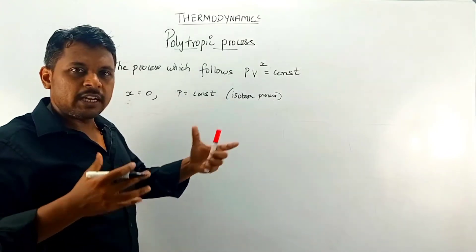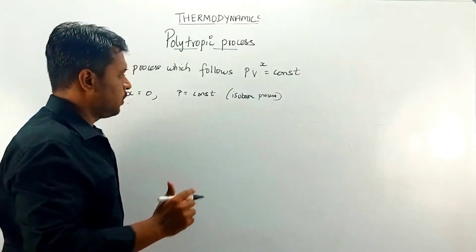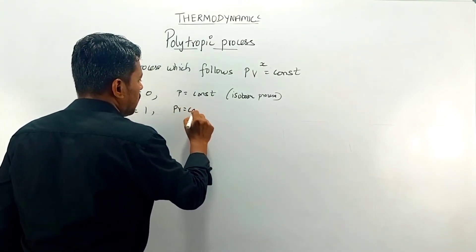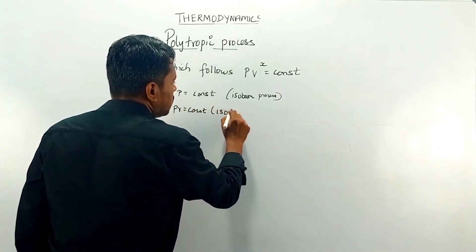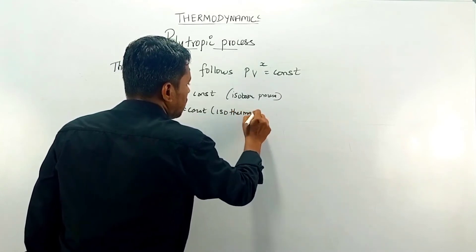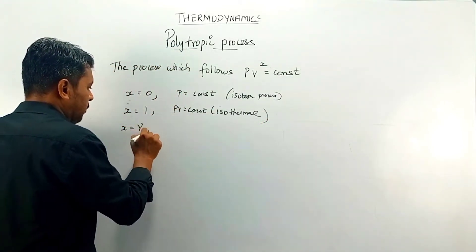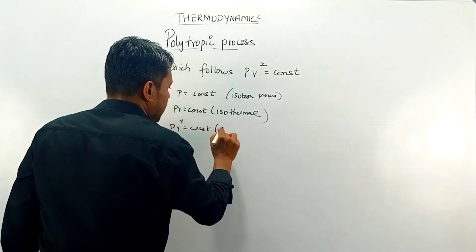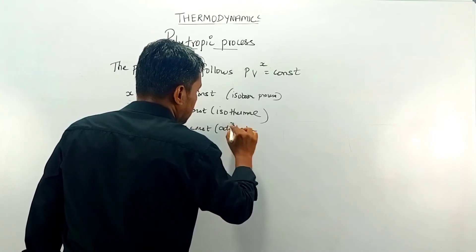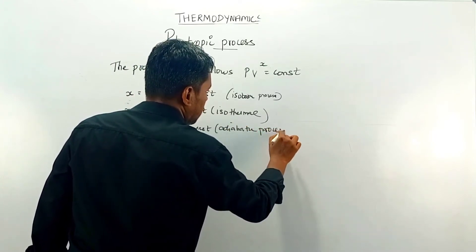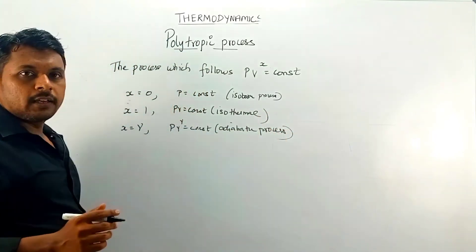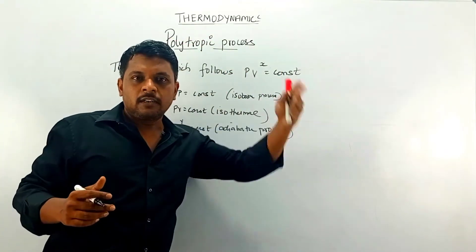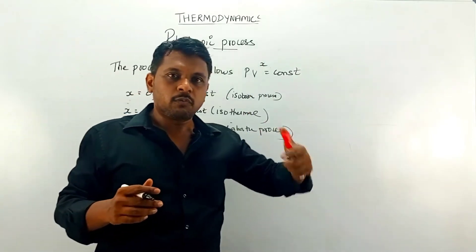Depending upon x, we determine the equation. For x = 1, we see that PV = constant, which is an isothermal process. For x = gamma, we get PV^gamma = constant, which is an adiabatic process.